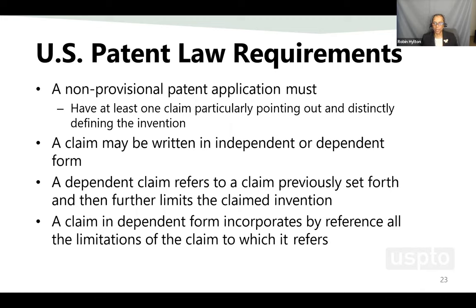U.S. patent law requires that a non-provisional patent application must have at least one claim, particularly pointing out and distinctly claiming the invention. The claim must be written in independent form, or in dependent form if you have more than one claim. A dependent claim necessarily incorporates all the limitations of the claim from which it depends. For example, if claim one recites 'a container comprising an opening, a container wall, and a bottom,' then claim two would say 'the container of claim one, further comprising details on the sidewall' — automatically incorporating the limitations from the previous claim.